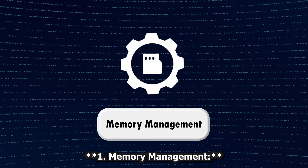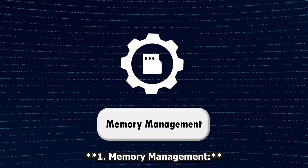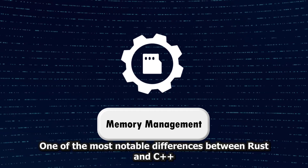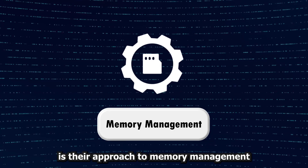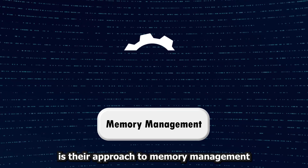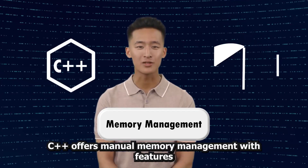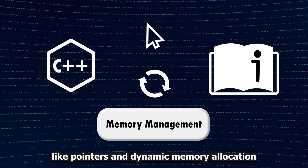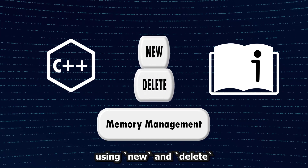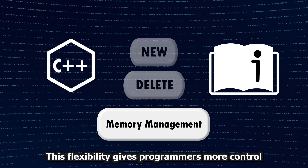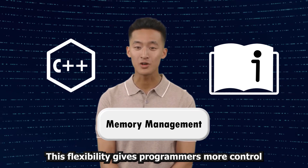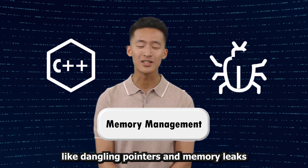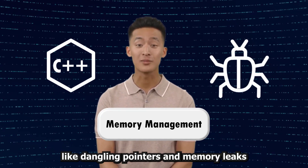1. Memory Management. One of the most notable differences between Rust and C++ is their approach to memory management. C++ offers manual memory management with features like pointers and dynamic memory allocation using new and delete. This flexibility gives programmers more control but also opens the door to memory-related bugs like dangling pointers and memory leaks.